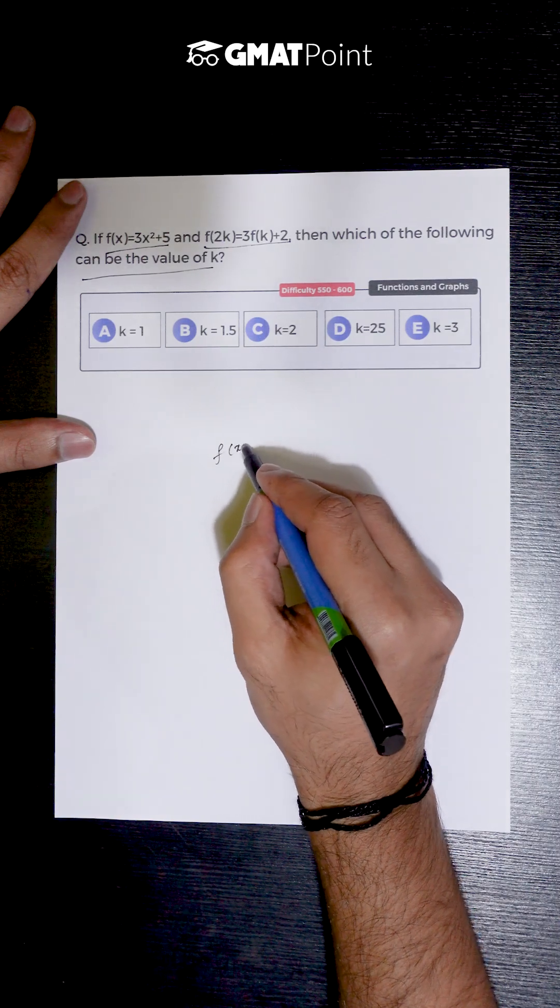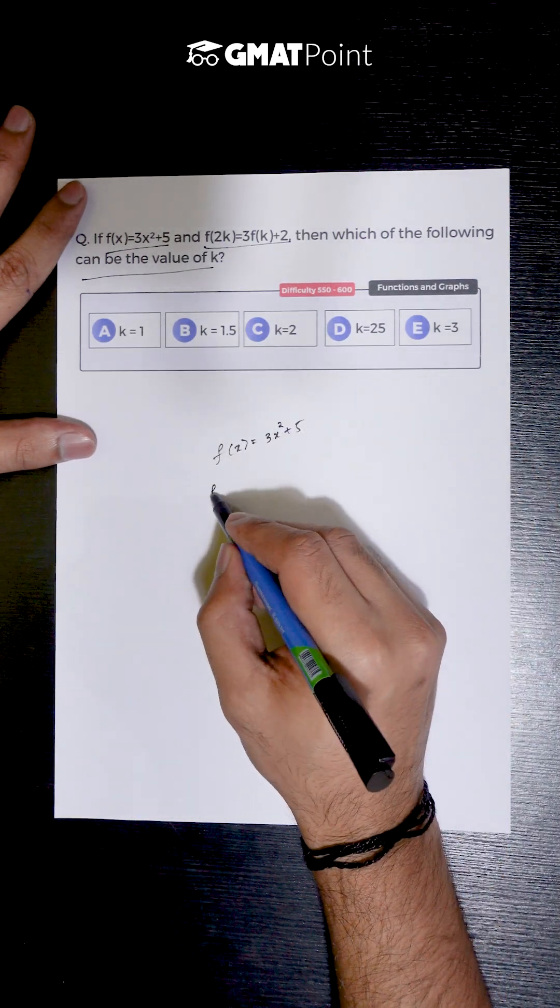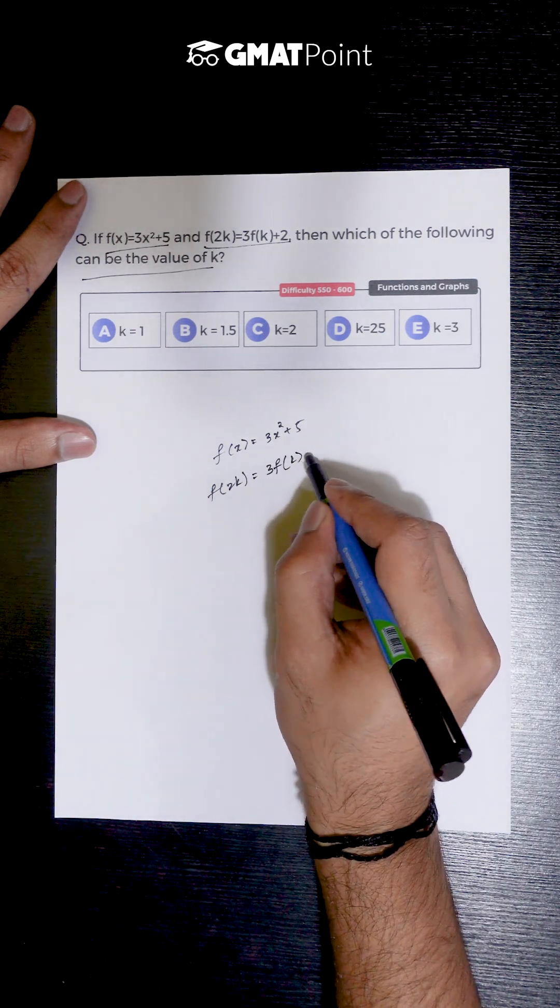The value of f(x) is given to be 3x² + 5 and we are also given that f(2k) is nothing but 3f(k) + 2.